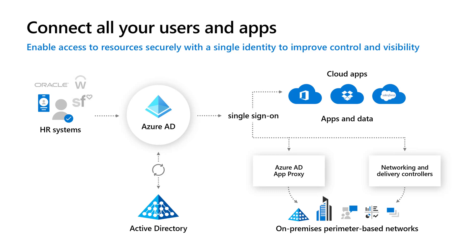Being able to do this starts with identity. With identity, it comes down to first and foremost single sign-on. Let's make sure that all the apps we're accessing — whether they are cloud apps, SaaS apps, or even apps on-premises — we're using the same identity to access all of them. And then let's make sure we have automated provisioning and deprovisioning fed in directly from our HR systems into Azure Active Directory.